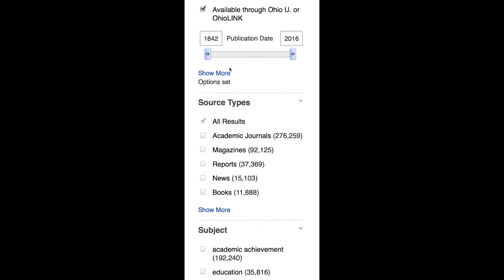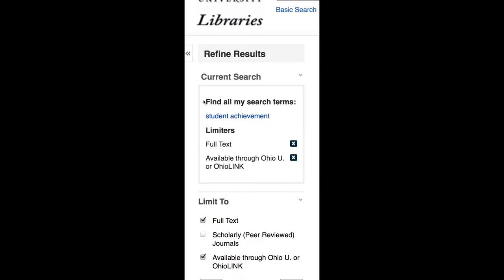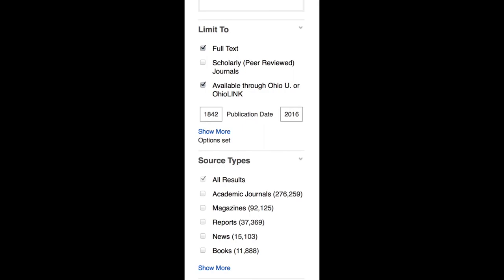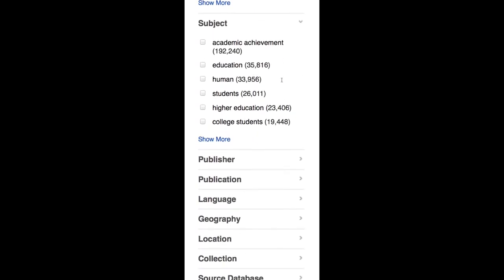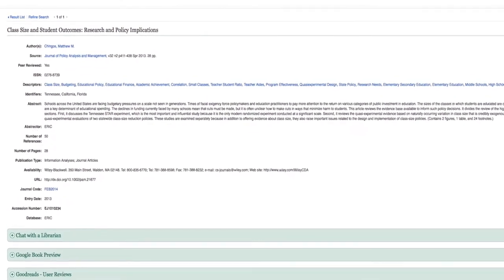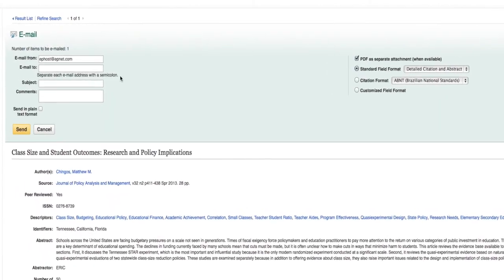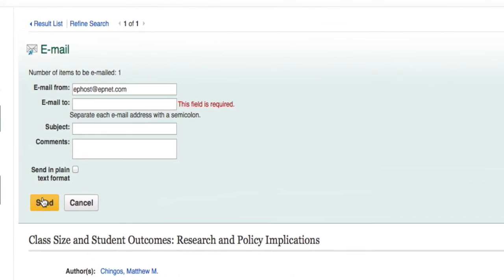In databases like Articles Plus, once you conduct a search, you are able to do things like limit by date, select the type of resource you are interested in, or follow the database provided subject terms to find additional items on the same topic. Articles Plus also allows you to email citations and full text items if available to yourself.